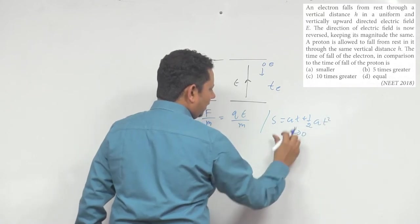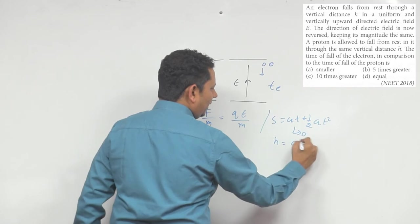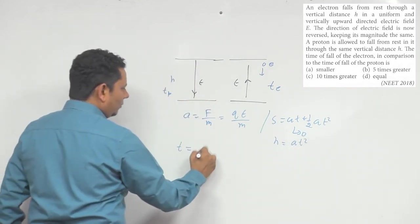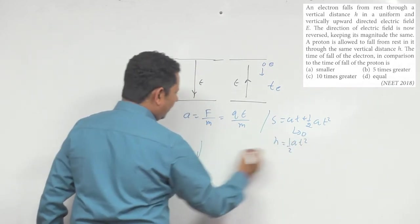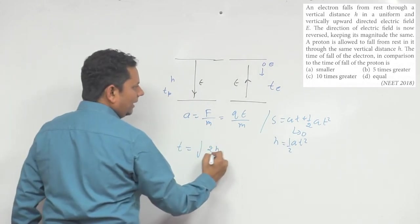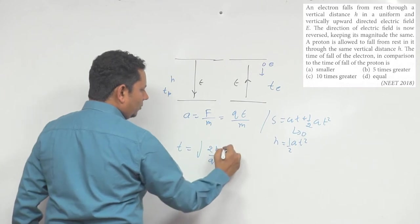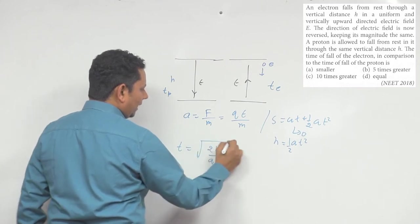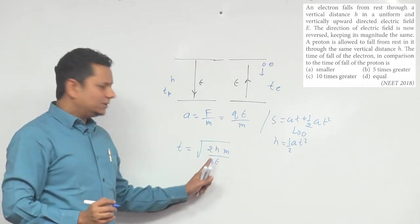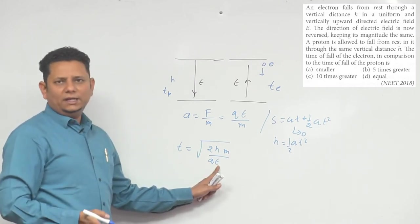तो S जो है, जो कि height H है, that will be equal to ½at². इससे time निकालें तो t = √(2H/A), और A की value QE/m रखने पर t = √(2Hm/QE)। यहाँ H दोनों के लिए constant है, charge दोनों का equal है, और electric field दोनों के लिए constant है।